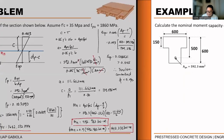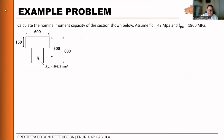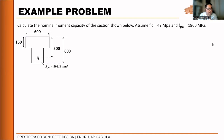For Example 2, we change the cross section. Calculate the nominal capacity of a T-section with f'c equals 42 MPa and FPU equals 1860 MPa. The T-section has a top flange width of 600 mm, flange thickness of 150 mm, DP equals 500 mm, total height of 600 mm, and the same 592.3 mm² area of six one-half inch diameter strands. The solution method is the same as before.